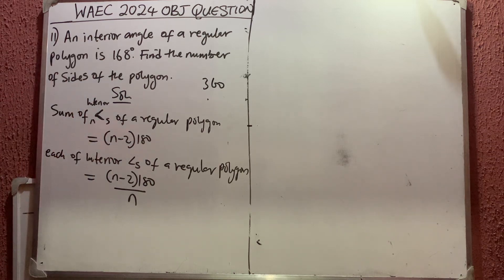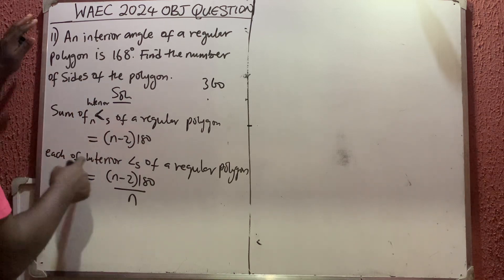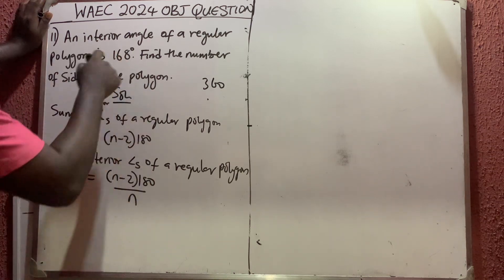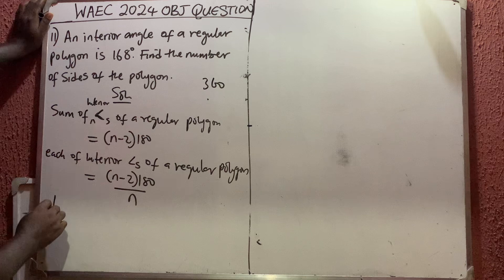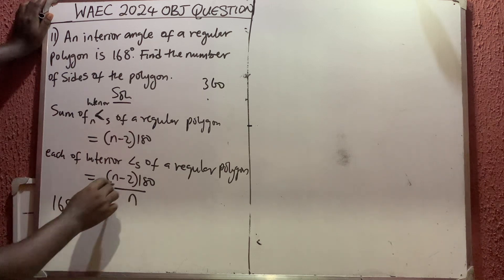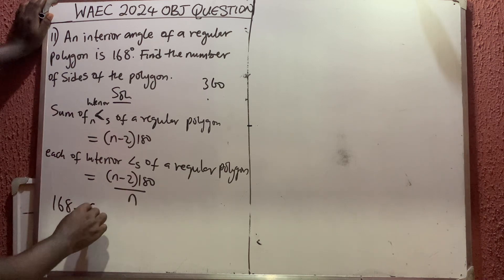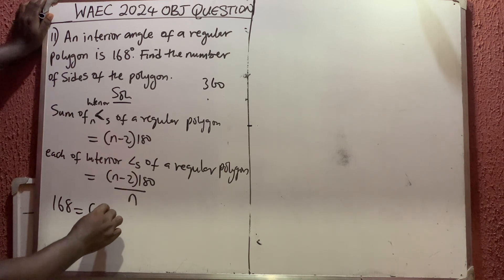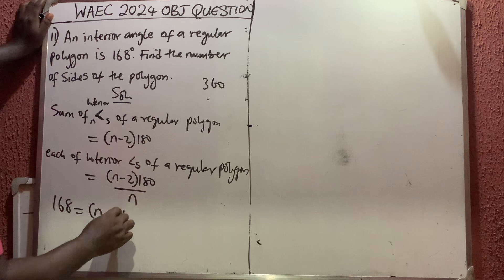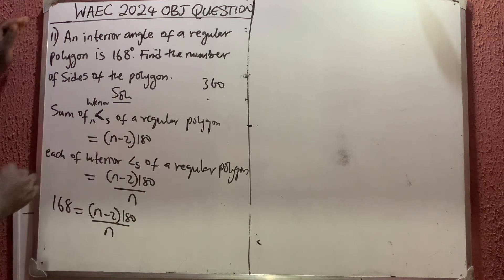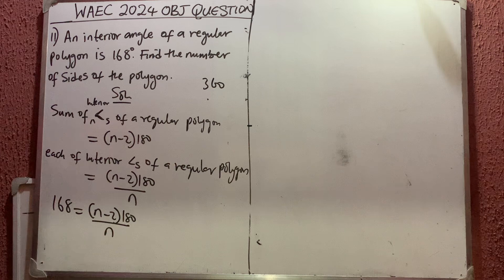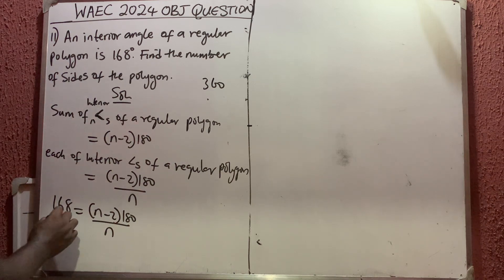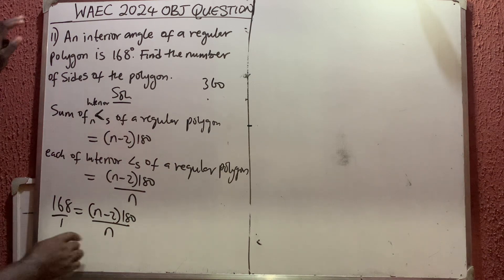Since they told us this is an interior angle, we use the interior angle formula. They said each interior angle is 168 degrees, so we set up: 168 equals (n minus 2) times 180, all over n.